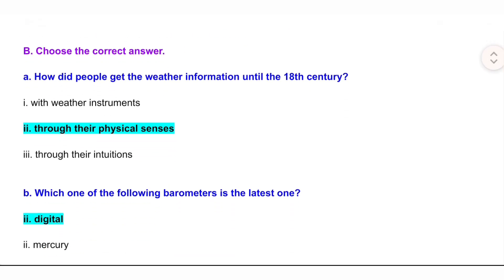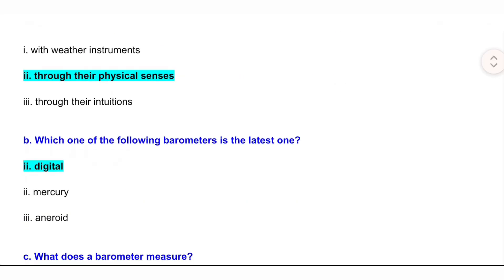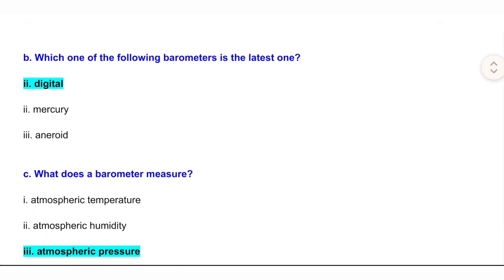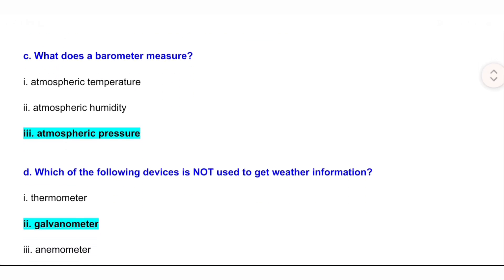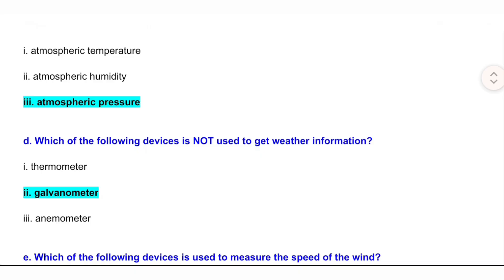B: Choose the correct answer. A: How did people get the weather information until the 18th century? Answer: Through their physical senses. B: Which one of the following barometers is the latest one? Answer: Digital. C: What does a barometer measure? Answer: Atmospheric pressure.